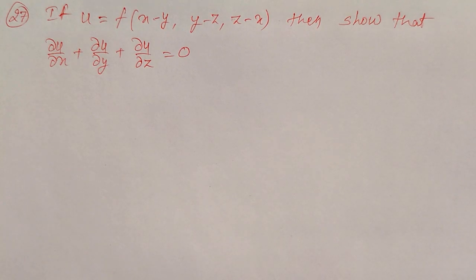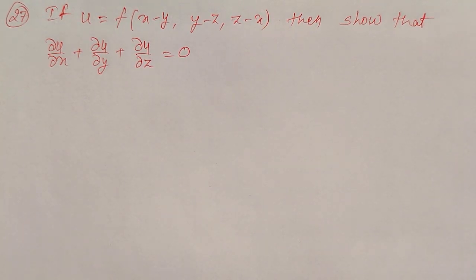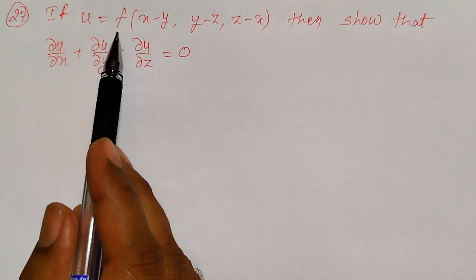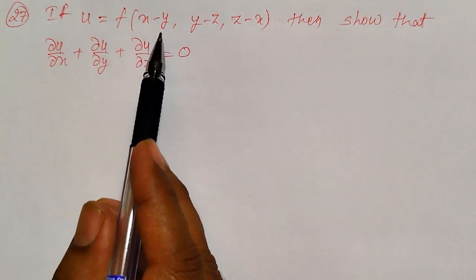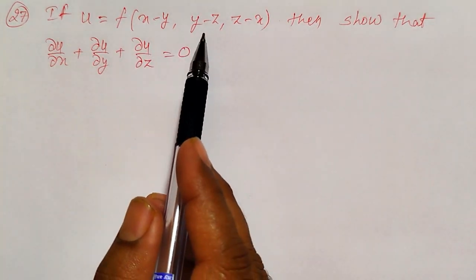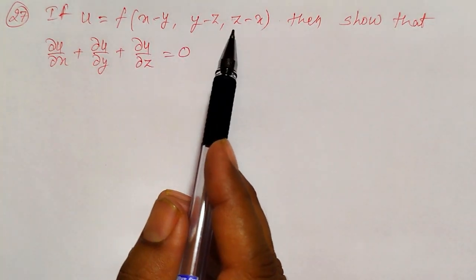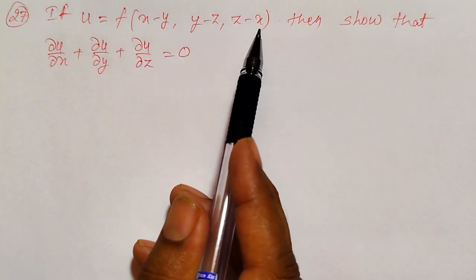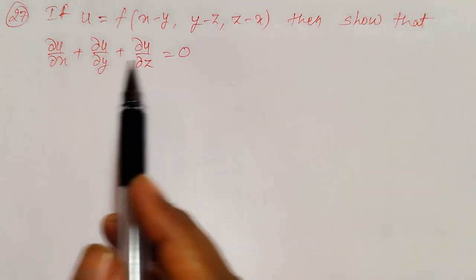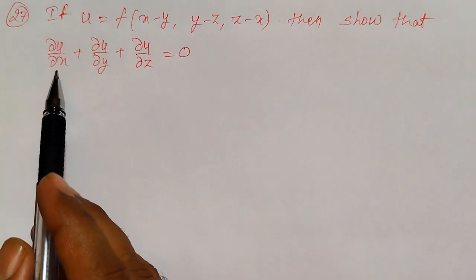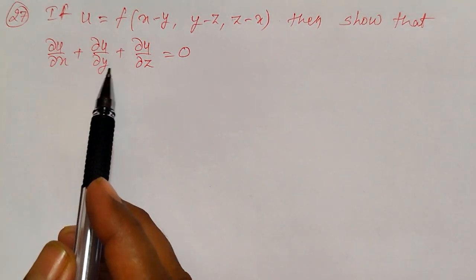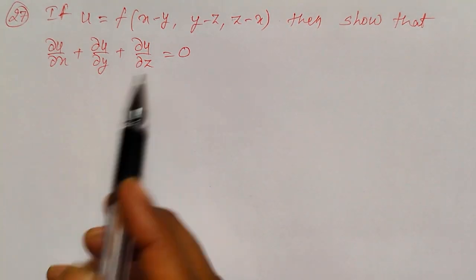Welcome friends. In this video I am going to solve an example on composite functions. If u is equal to f of (x minus y, y minus z, z minus x), then we have to show that ∂u/∂x + ∂u/∂y + ∂u/∂z = 0.